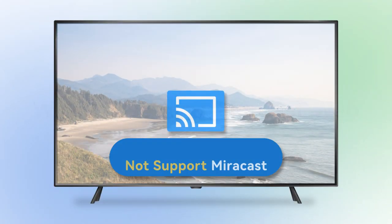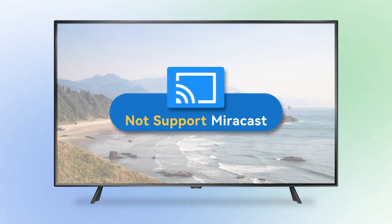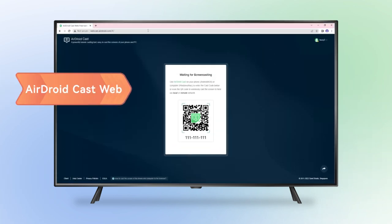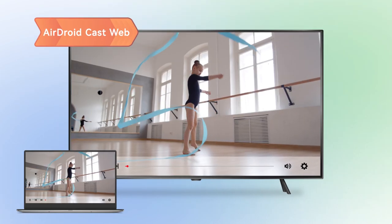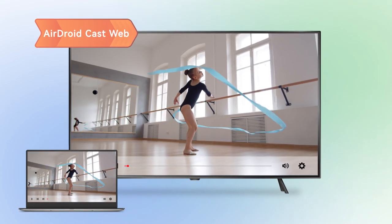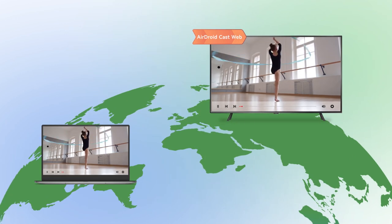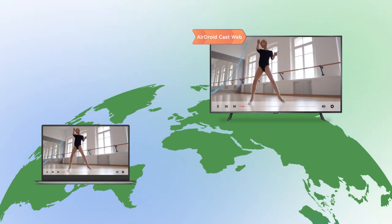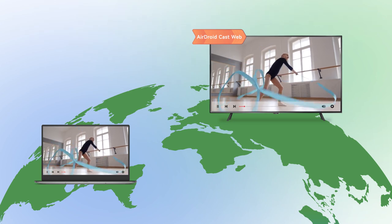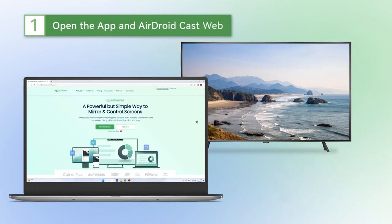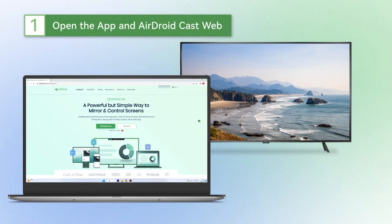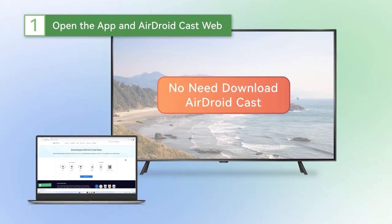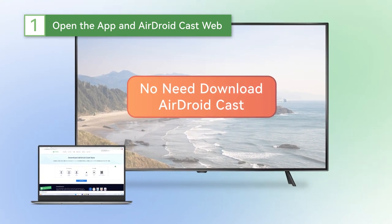If your TV doesn't support Miracast technology, you have to try this software. With AirDroid Cast Web, you can cast your screen on a TV anytime, anywhere. It is one of the effortless methods to cast a PC to a TV as it just takes a minute to do it. It only requires the installation of AirDroid Cast on the sending device — you don't even need to download the app on your TV.